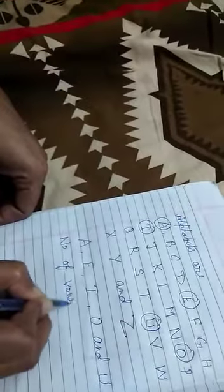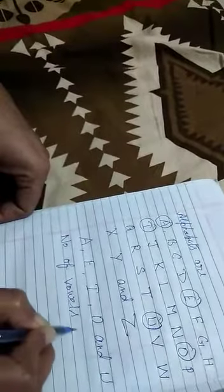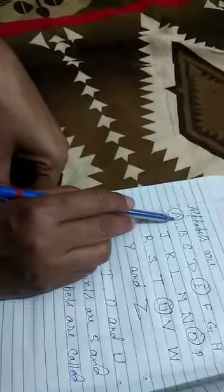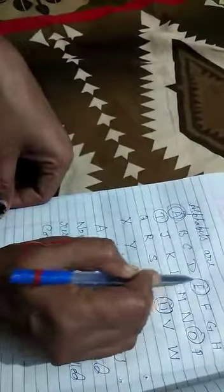Number of vowels are 5. And rest alphabets are A, E, I, O, and U.